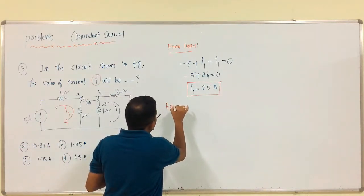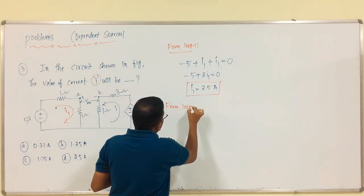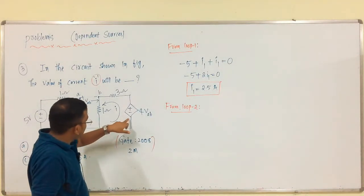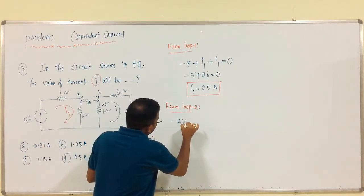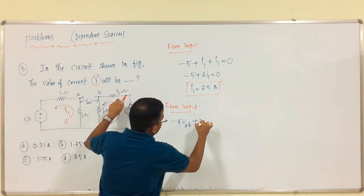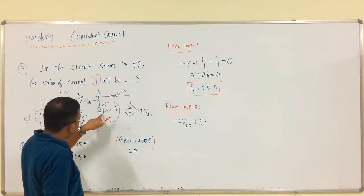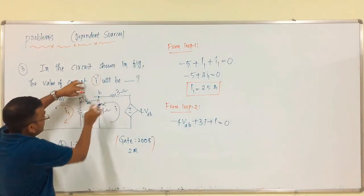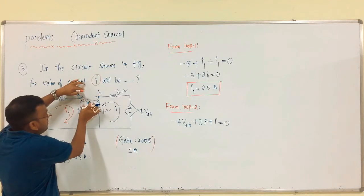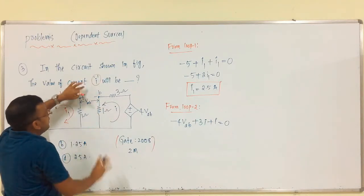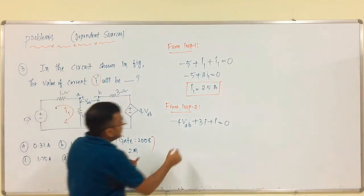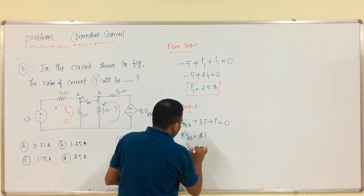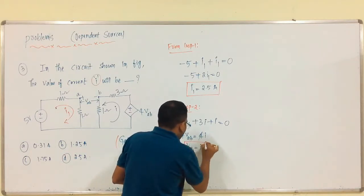From loop 2: the examiner has provided the current direction. Starting from this: minus 4·VAB plus 3·i plus i equals 0 — this current is exclusively for this branch only. There is no connection between these two branches, but node A and node B give voltage VAB. So: 4·VAB equals 4·i, therefore VAB equals i.